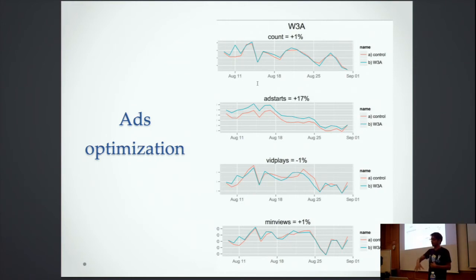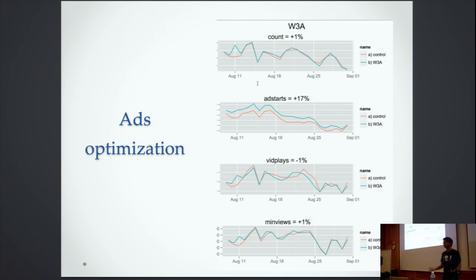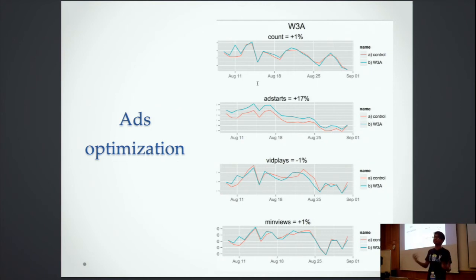We've been running about 10 to 15 different variations of ad optimizations, trying to figure out the sweet spot on web, iOS, and Android. This is the money-making part of the business, so you need to get it right — and having this framework lets us do that.